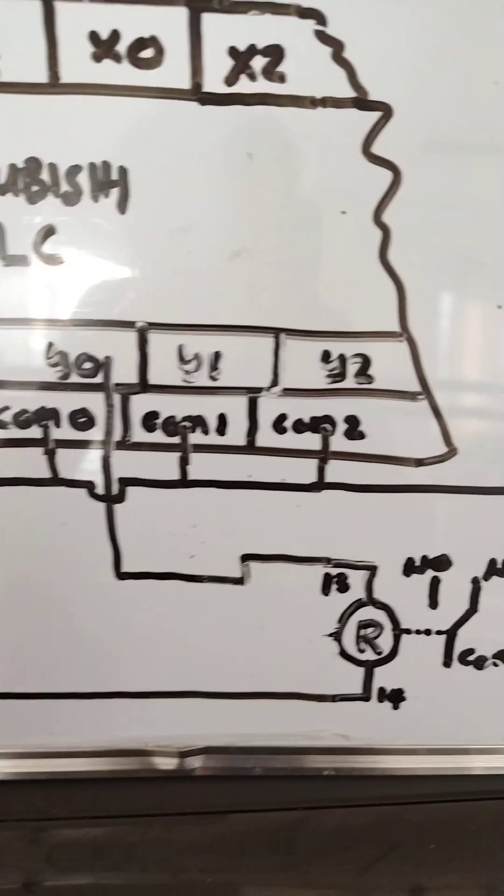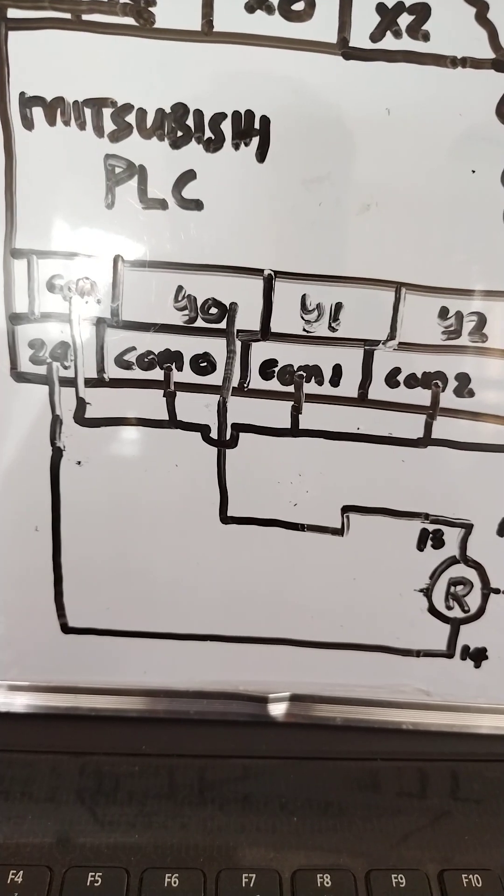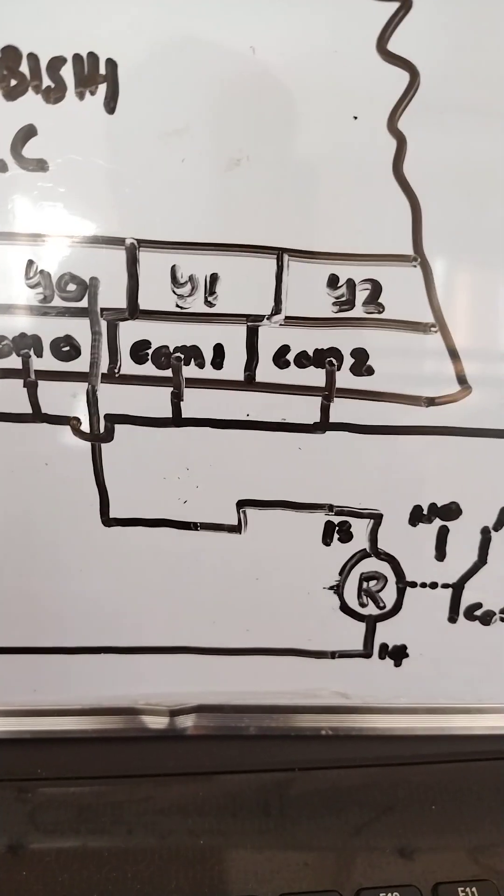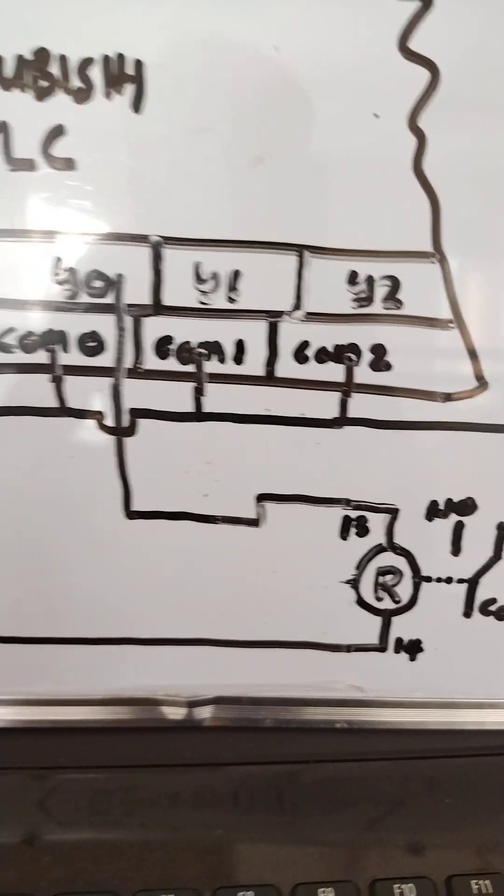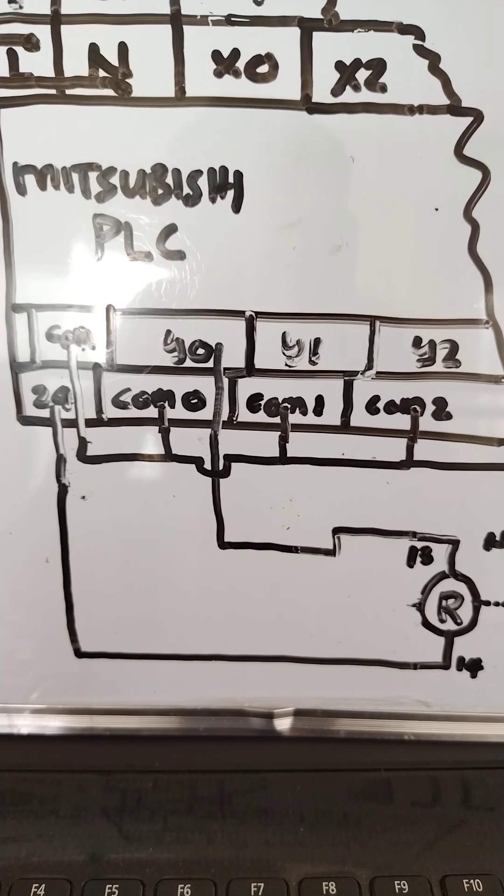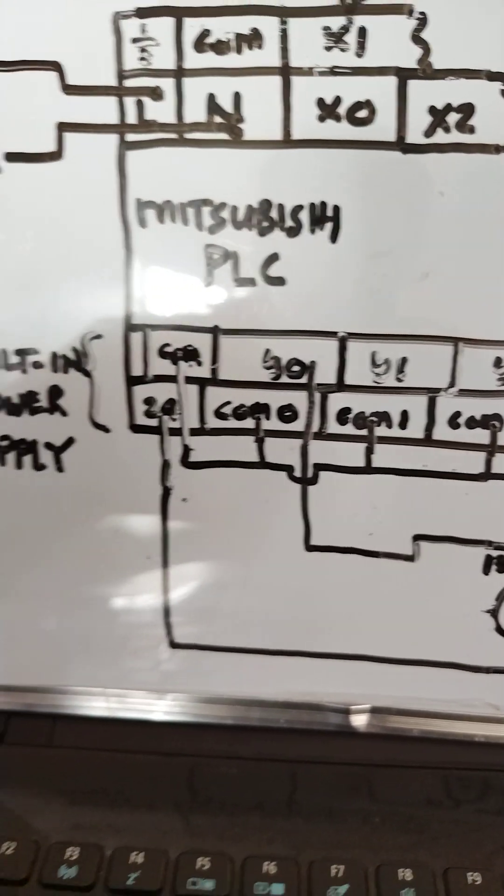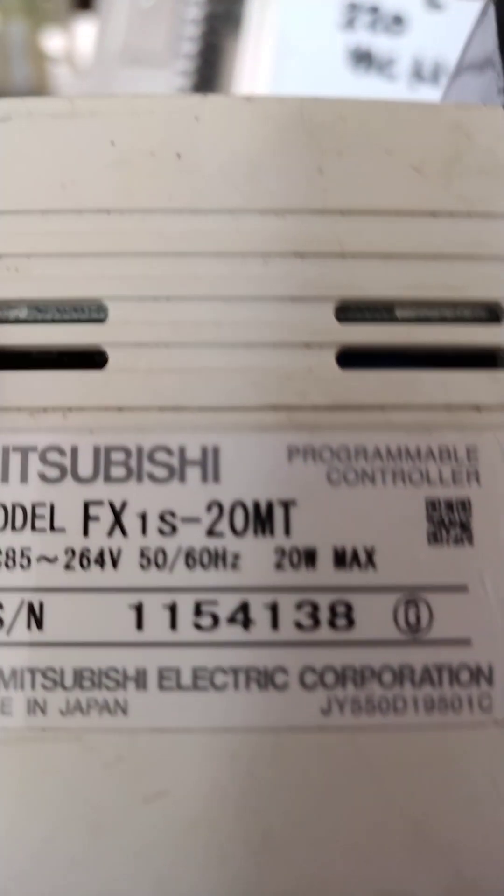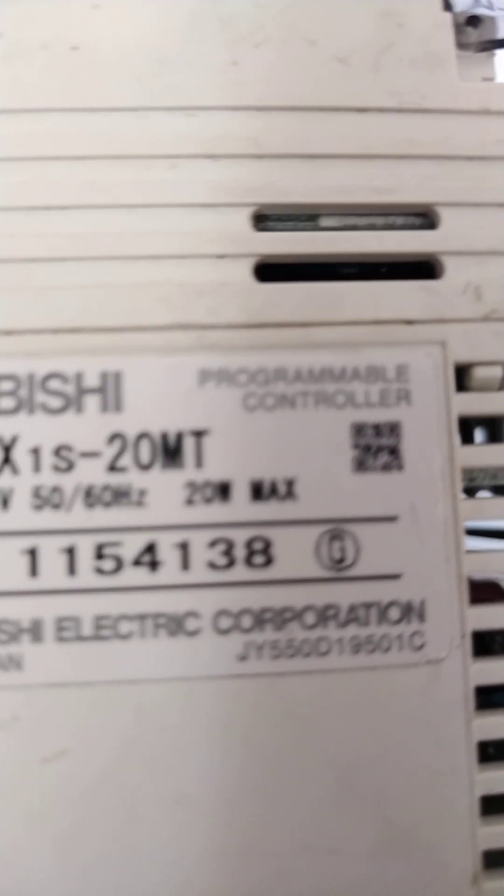And the output - for the output I'm using one relay here to activate the 24 volts. This relay base of 24 volts is directly connected to terminal 14, and the Y0 output will be connected to 13. Let me check - so again, how do you know that it is a transistor? As you can see in the model FX1S-20MT, the T there represents transistor.